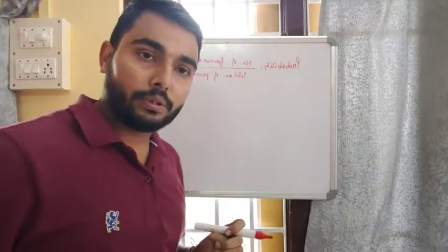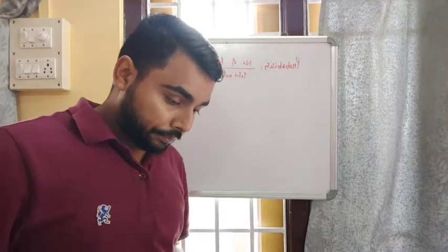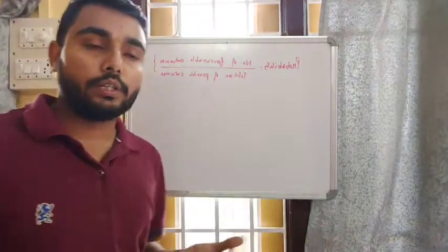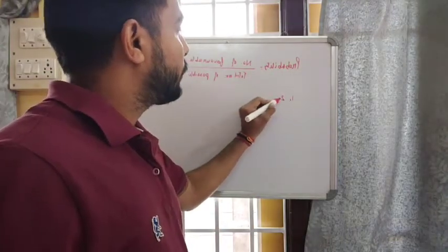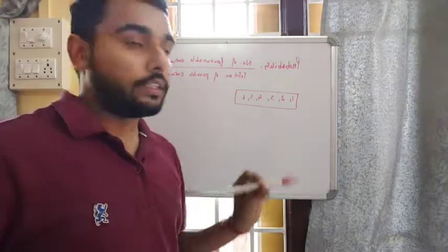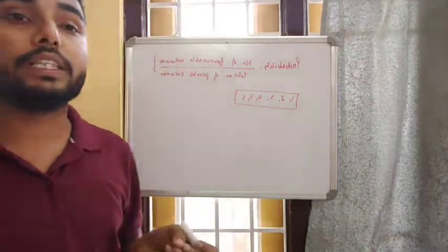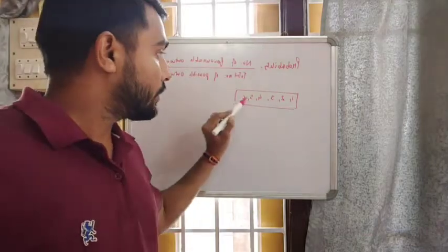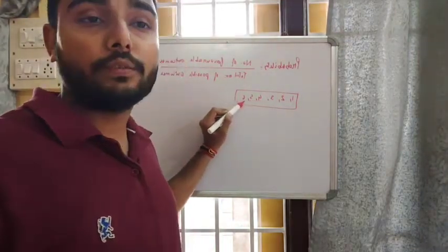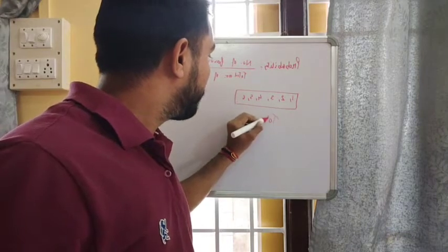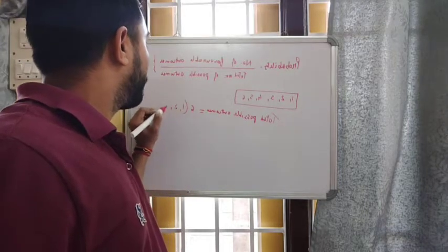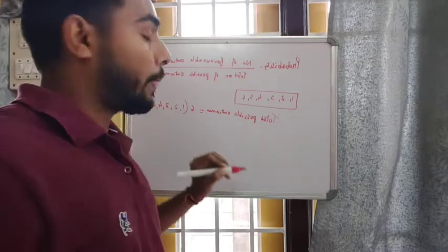Moving to exercise on page number 270, exercise 20, question number one: a die is rolled once. Whenever you roll a die, you can get one, two, three, four, five, and six — these are the six possible outcomes. All six numbers will not arrive at once; you may get any one of them. So total possible outcomes are six.